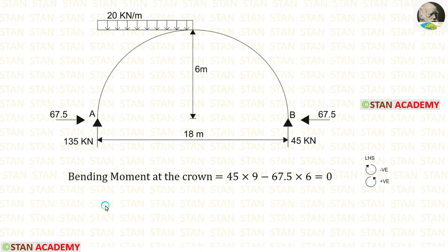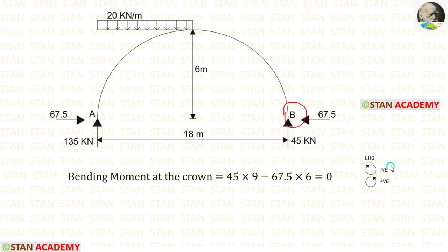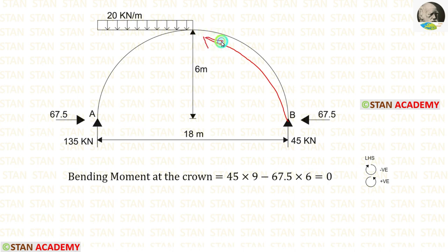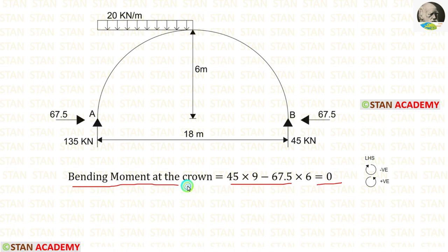We have been asked to find the bending moment at the crown. Calculating from the right side is easier: up to the crown we have VB = 45 kN and horizontal thrust = 67.5 kN. Moving left from B, anti-clockwise is positive: VB × 9 = 45 × 9 (positive), minus horizontal thrust × height = 67.5 × 6 (negative). After calculation, the bending moment at the crown equals 0.